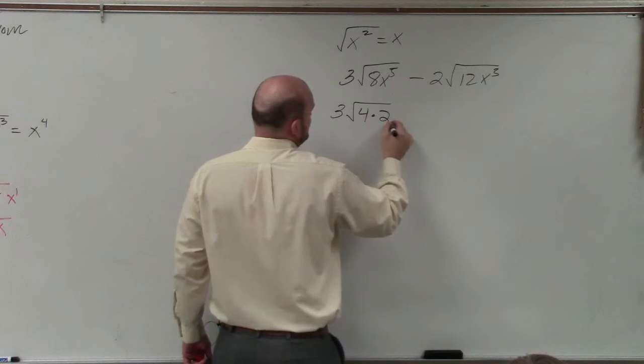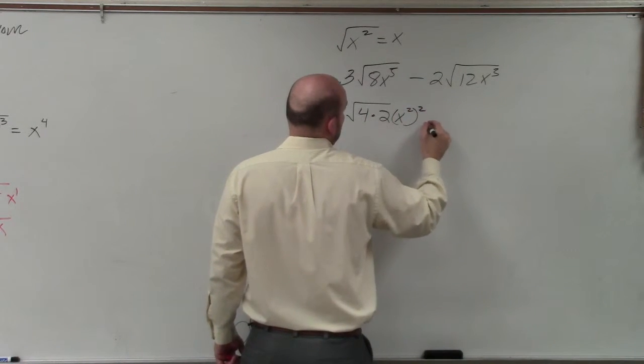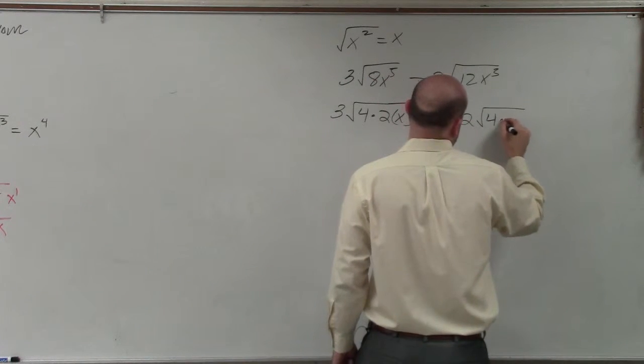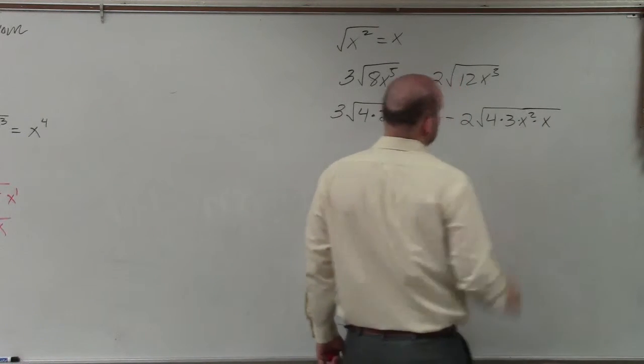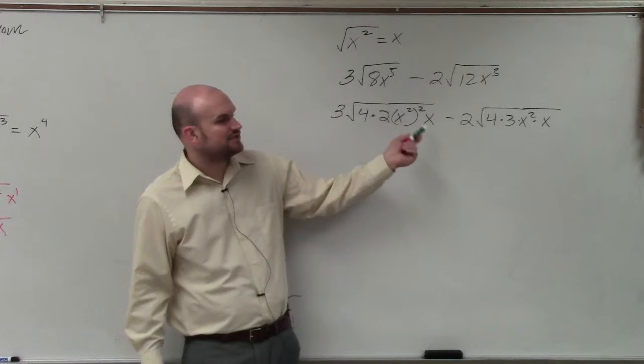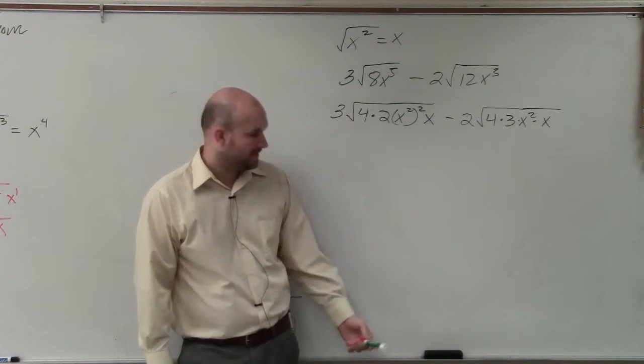So what I'll do is I'll write this as 4 times 2x² times x minus 2 times 4 times 3x² times x. Does everybody agree with me that how I just rewrote this is exactly the same thing as those two? Yes? OK.